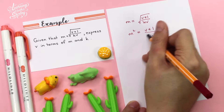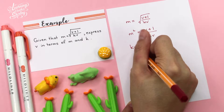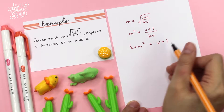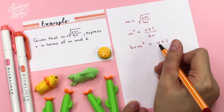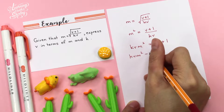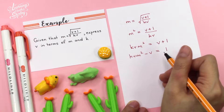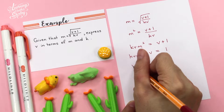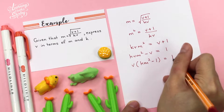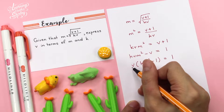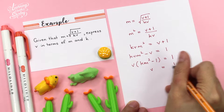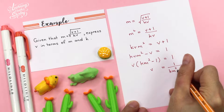Next, I'm going to move this over to the left-hand side: kv m squared equals v plus 1. Then we're going to group all the v's together on one side, which means we move v to the left-hand side, so kv m squared minus v equals 1. Next, we factorize the v, giving v bracket (km squared minus 1) equals 1. In order to get v on the left-hand side, we move this bracket to the right-hand side, so it becomes v equals 1 over (km squared minus 1).